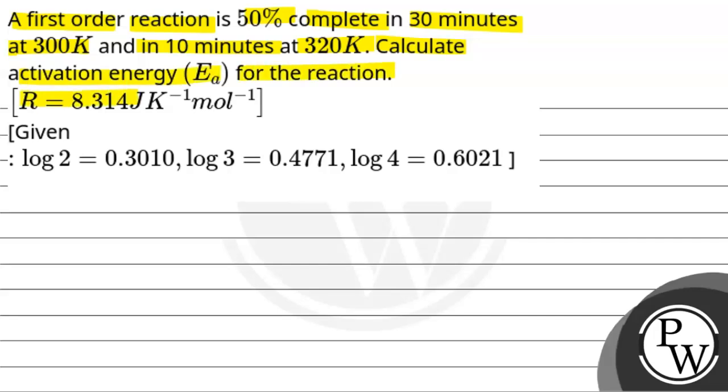R is given as 8.314 joules per Kelvin per mole. And log 2 is 0.3010, log 3 is 0.4771, and log 4 is 0.6021.